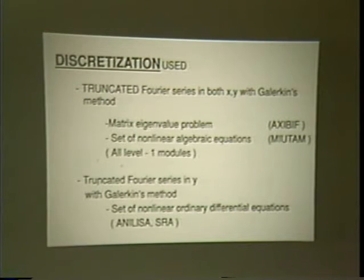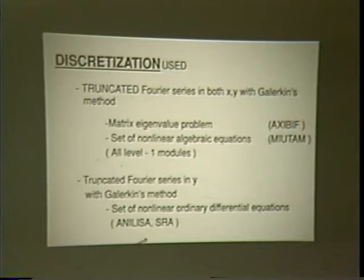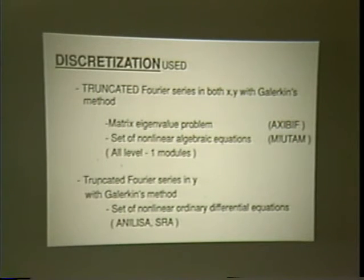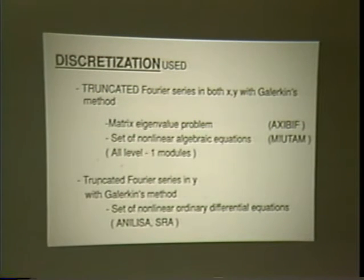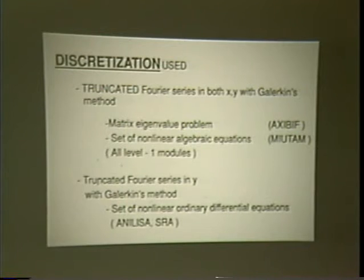The drawback of that simplest approach is that you cannot satisfy boundary conditions at the shell edges — you satisfy only whatever the trigonometric function satisfies. Since boundary conditions are important, you may want to move to level two. You still keep a Fourier series in the y direction, because you know there will be a number of waves there. You apply Galerkin's method and obtain a set of nonlinear ordinary differential equations in x, which you solve numerically, allowing you to satisfy boundary conditions at the two edges.